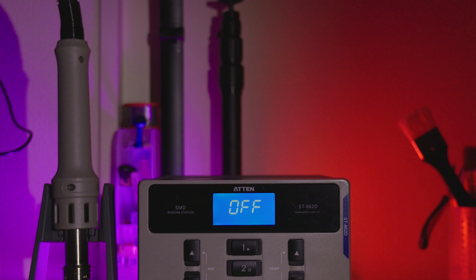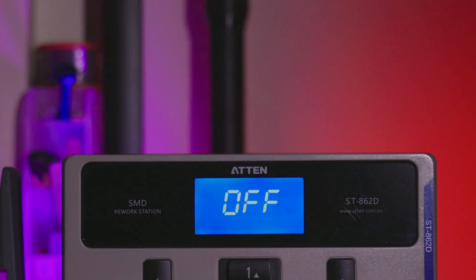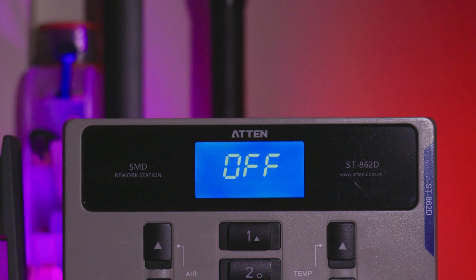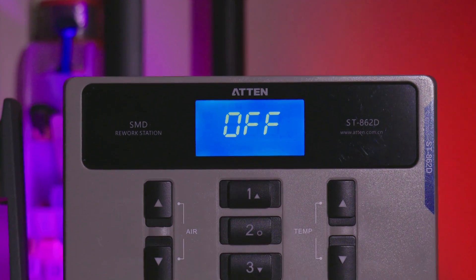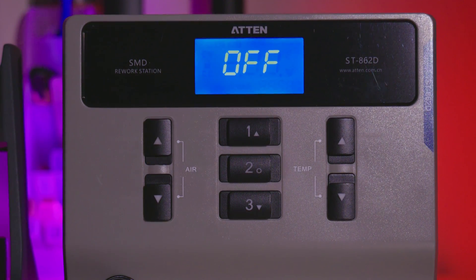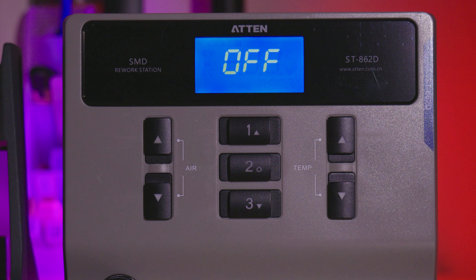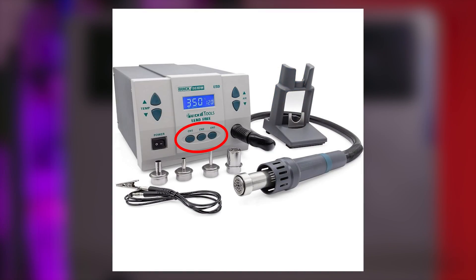Before we get into the nitty gritty of things, let's first take a look at the front panel user interface. Much like other stations in this class, you'll find a large inverter display along with digital air and temperature controls, and of course you have 3 temperature presets much like the QUICK and SUGON. I like the placement of these presets more than the QUICK, which would be susceptible to accidental input if the main unit was on a desk.